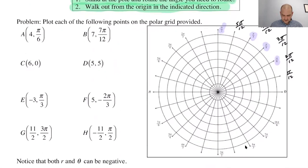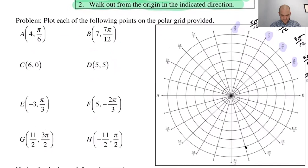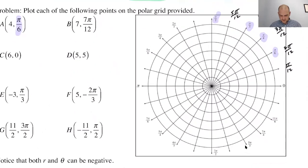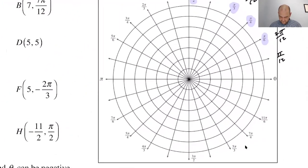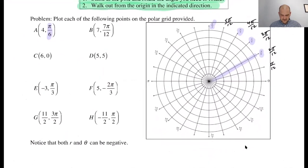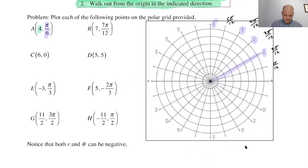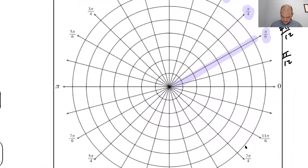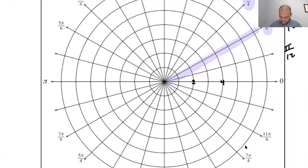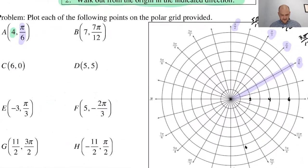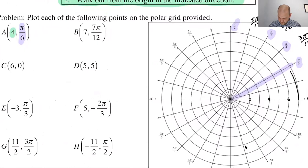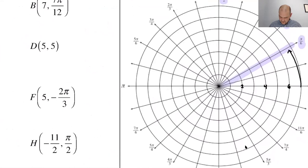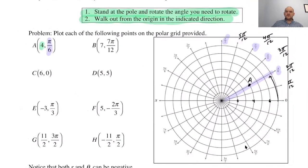Let's actually plot some points. For the first point, theta is pi over 6 so you rotate and face pi over 6, and R is 4 so you go out four units. I'll count by ones — labeling the circles at 2, 4, 6. I've rotated to pi over 6 and go out four units, landing on the circle of radius 4. That's point A — that's all it takes to plot polar points.